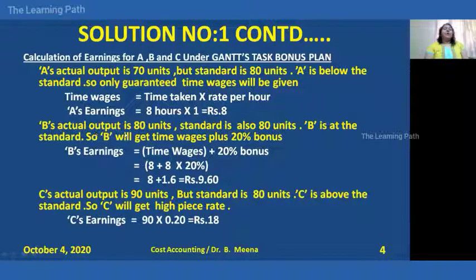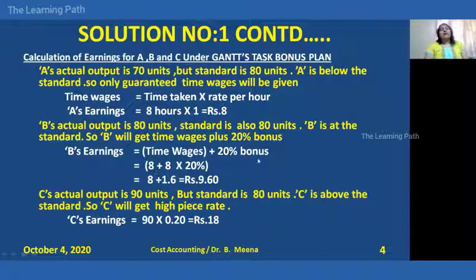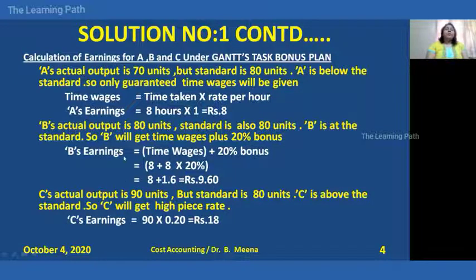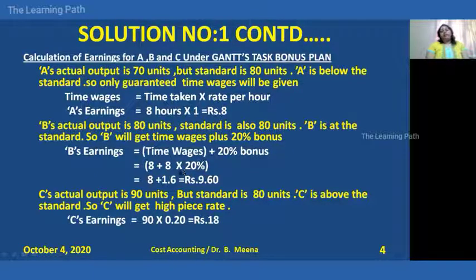Moving on to Worker B: B's actual output is 80 and the standard is also 80, so B is at standard. B will get time wages plus 20% bonus. The time wages calculated are ₹8. On top of that, B gets 20% bonus: 8 × 20% = ₹1.60. So B's total earnings = ₹8 + ₹1.60 = ₹9.60. This is the difference between A and B — A gets only time wages, while B gets an additional 20% bonus on time wages.